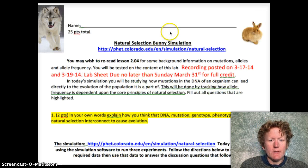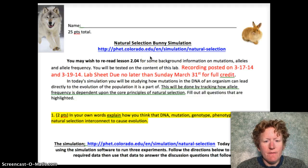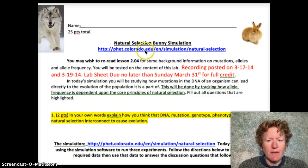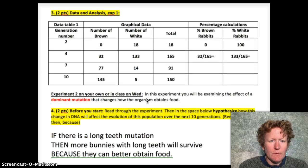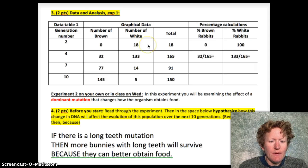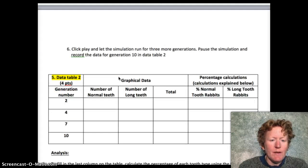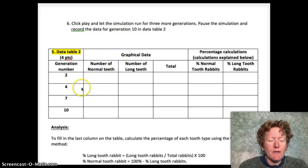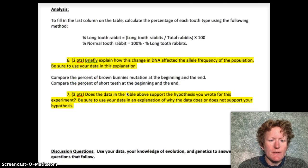Here's what your lab sheet should look like. Remember if you need the URL to find the FET simulation, it's right here at the top of the lab, or I'll also put it in the notes in the YouTube. We already finished data table three together and figured out our hypothesis for this experiment in part one. Then you filled out data table two on your own using the FET simulation, and now we're going to do question six.